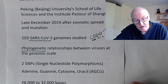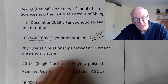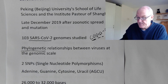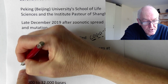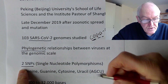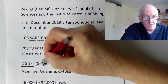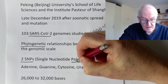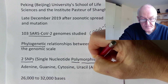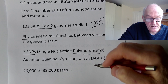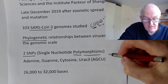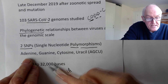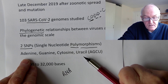Viruses can change, mutate and evolve. There were two changes - some studies have shown three but this one showed two - called single nucleotide polymorphisms. This coronavirus is an RNA virus - ribonucleic acid virus. The bases are adenine, guanine, cytosine and uracil: A, G, C, U. The COVID-19 virus is one long strand of RNA.